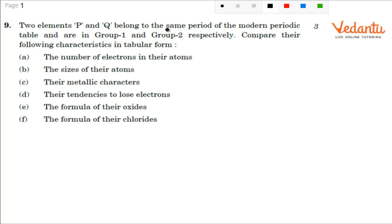Two elements P and Q belong to the same period of the modern periodic table and are in Group 1 and Group 2 respectively. The important point here is same period - this is very important. Compare their following characteristics in tabular form. You have 6 characteristics here and each will allow you half marks or total 3 marks for this particular question.